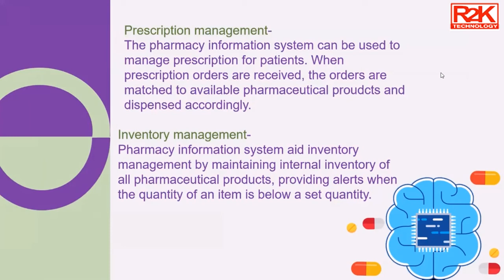For inventory management, the system aids by maintaining an internal inventory — a list of all pharmaceutical product stocks within the program itself. It provides alerts when the quantity of an item falls below a set level, so you can monitor low-stock items, products that need to be refilled, items that are expiring and need to be discarded, or any products that need to be recalled — all visible in one software.